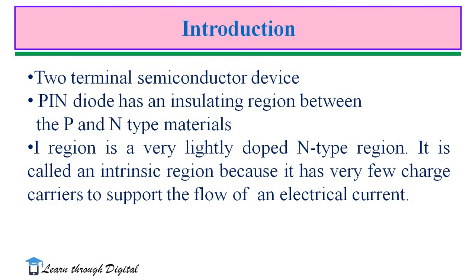A PIN diode is a two-terminal semiconductor device. It has an insulating region between the P and N type materials. It is therefore a multi-region device despite having only two electrodes. The I region is not really a true intrinsic semiconductor, but rather a very lightly doped N-type region. It is called an intrinsic region because it has very few charge carriers to support the flow of electric current.